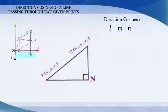Now, in a right angle triangle PNQ, angle PQN is equal to gamma.